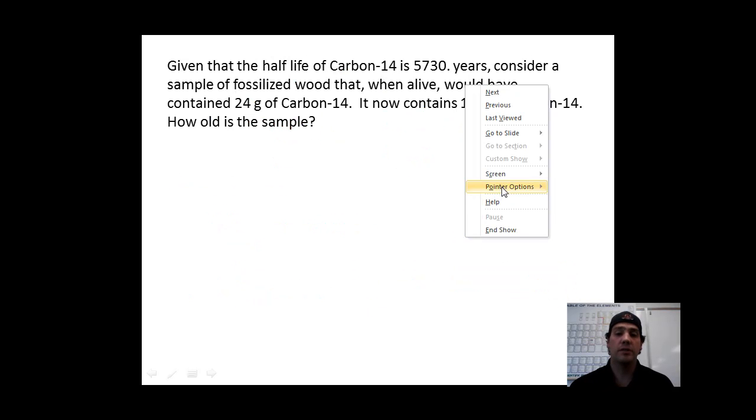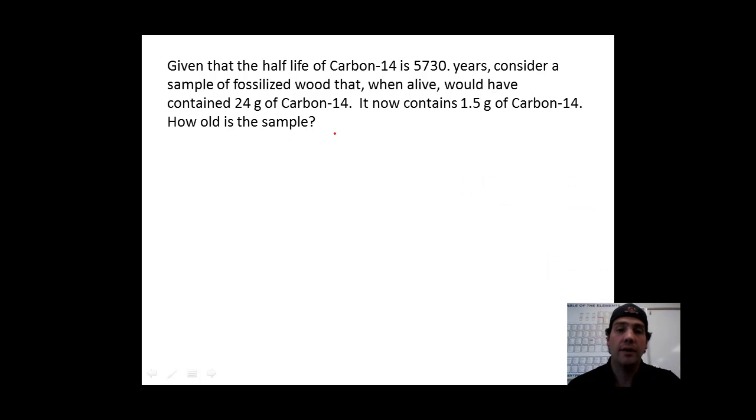This next problem is a little bit different, but we're going to start the same way. Let's define our variables: What's our initial mass and our final mass? What's our time that the decay process occurs over? And what's our length of our half-life? Let's try to pick those numbers out of this equation. The half-life of carbon is 5,730 years. If it originally contained 24 grams of carbon-14, that's going to go right here. It now contains 1.5 grams. It's always the smaller number that goes for the MT value. How old is the sample? This is our variable here. This is what we want to figure out.